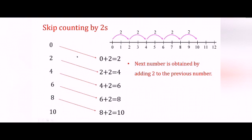Again it will skip a number which is 3 and land on number 4. Similarly it skips a number every time and lands on numbers 6, 8 and 10. In skip counting by 2s the next number is obtained by adding 2 to the previous number. So starting from 0: 0 plus 2 is 2, 2 plus 2 is 4, 4 plus 2 is 6, 6 plus 2 is 8, 8 plus 2 is 10.